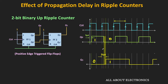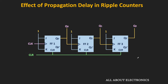Similarly, during the third clock cycle, the output should go from 10 to 11, and it goes into that state after the propagation delay of Q0. During the next clock cycle, the output should go from 11 to 00, but due to the propagation delay of the flip-flops, momentarily the output goes into a transient state and then becomes 00. So because of this propagation delay of the flip-flop, during the decoding of the count, momentarily we might get a false reading. The same thing can also be seen in the 3-bit down counter.